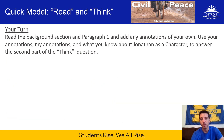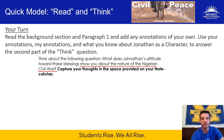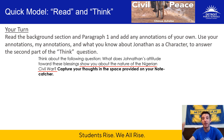Now it's your turn. Feel free to read the background section again as well as paragraph one to add your own annotations — maybe you felt like I missed something. Then you're going to use those annotations, my annotations, and what you know about Jonathan as a character to answer the second part of the think question. Just a reminder, the second part relates to what Jonathan's attitude toward the blessings shows about the nature of the Nigerian Civil War — not just how Jonathan feels, but about the nature of the war in general. Use what I went over with you to support you in that.